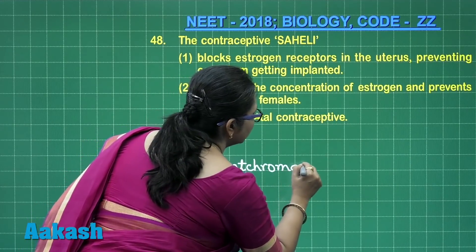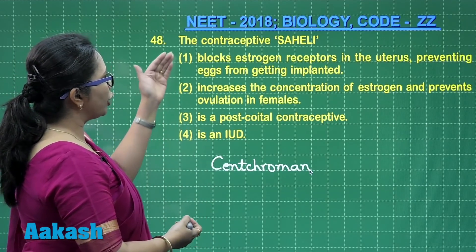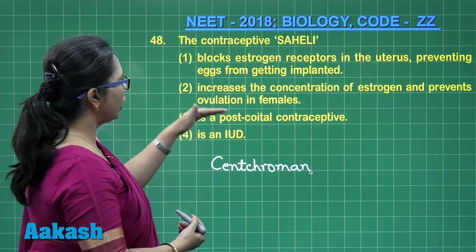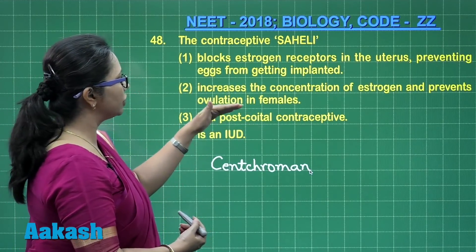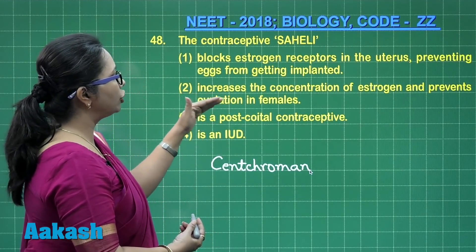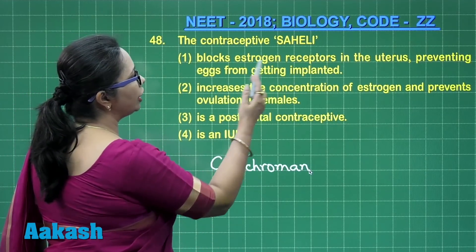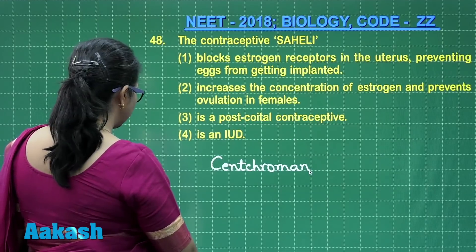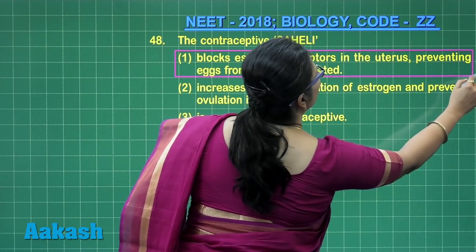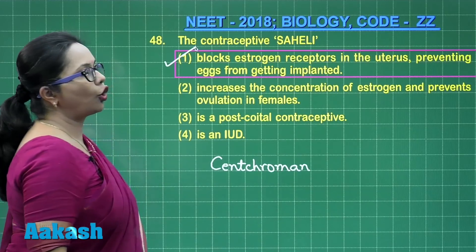It acts by modifying the estrogen receptors in the uterus. Looking at the four options: it is an IUD — that is wrong. It is a post-coital contraceptive — that is also incorrect. It increases the concentration of estrogen and prevents ovulation in females — also incorrect. The correct answer is option one: it blocks estrogen receptors in the uterus, preventing eggs from getting implanted.